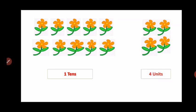Like this example, you saw that we have made a group of ten flowers different and four flowers different. So those ten flowers, that means it is one ten, and the four remaining flowers, that will be named as four units.